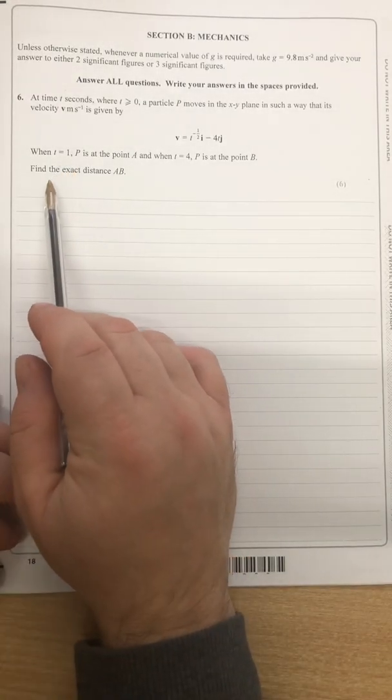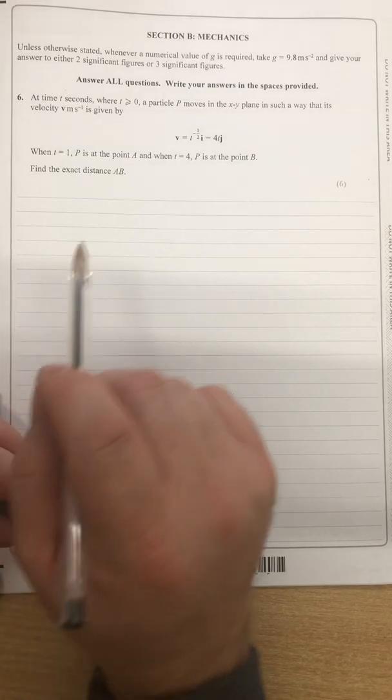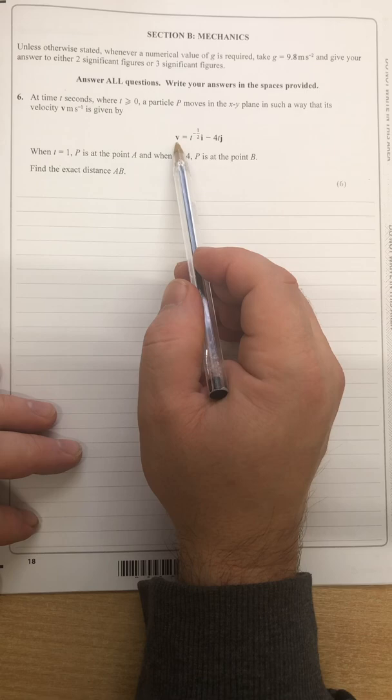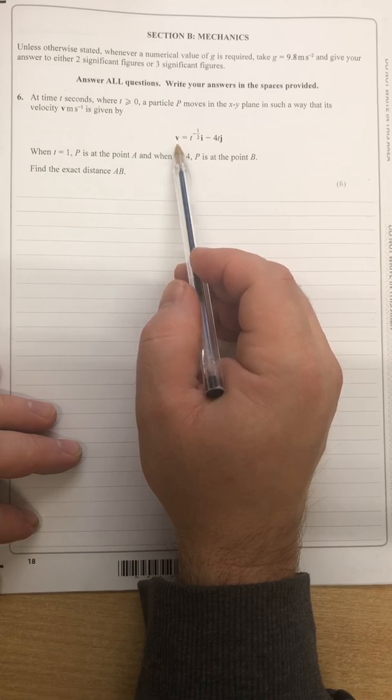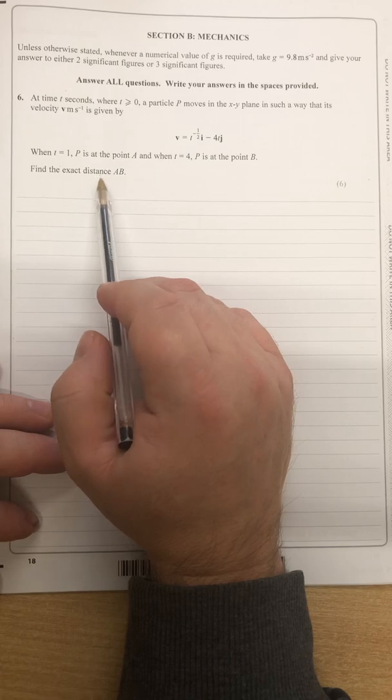Then it goes on to say find the exact distance AB, and that's the key bit of information for me. Because at the moment I can see I've got an equation for v velocity and I want distance which is going to come from displacement.